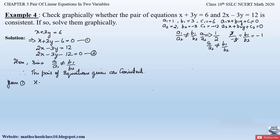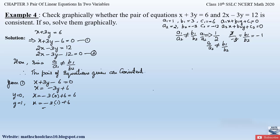From Equation 1, x + 3y − 6 = 0, we get x = −3y + 6. Substituting y = 0 gives x = 6, and substituting y = 1 gives x = −3 + 6 = 3. So the table for Equation 1 is: when y = 0, x = 6; when y = 1, x = 3.